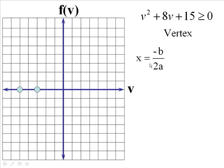Now let's find the vertex. You have negative B over 2A where B is 8. So you have the opposite of 8 is negative 8 over 2 times 1. A is 1. So 2 times 1 is 2. Negative 8 over 2 is negative 4.